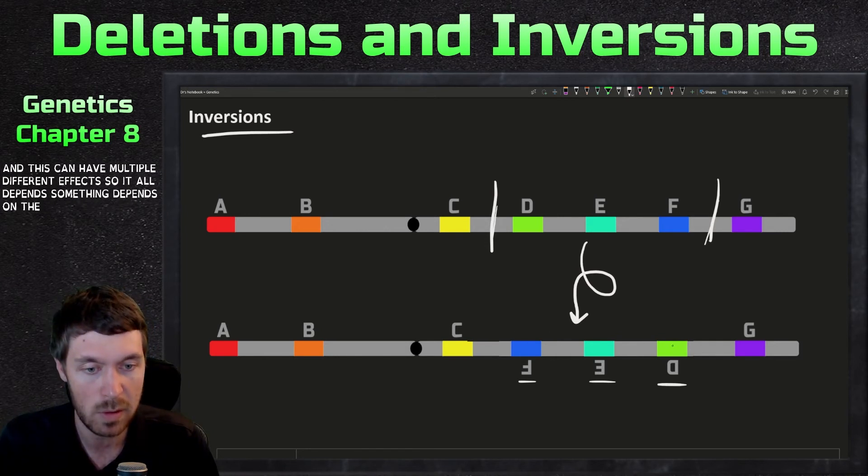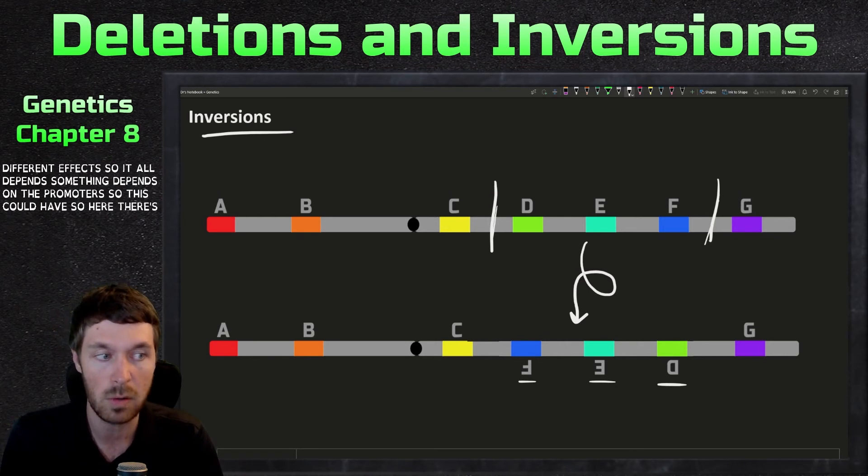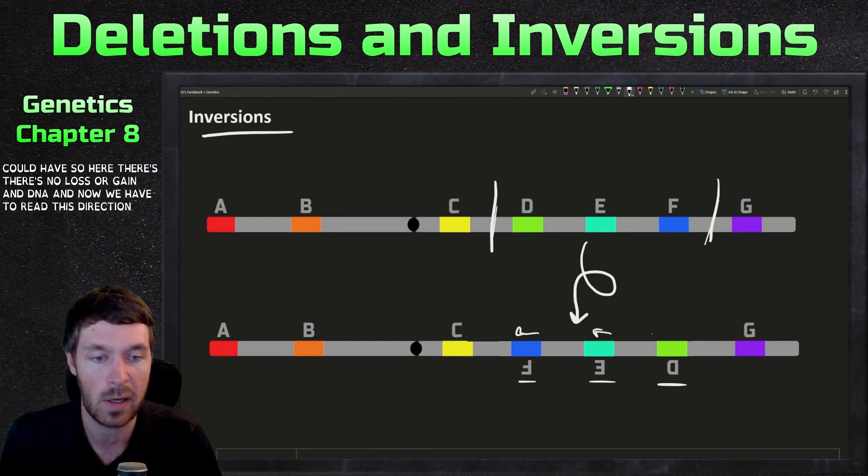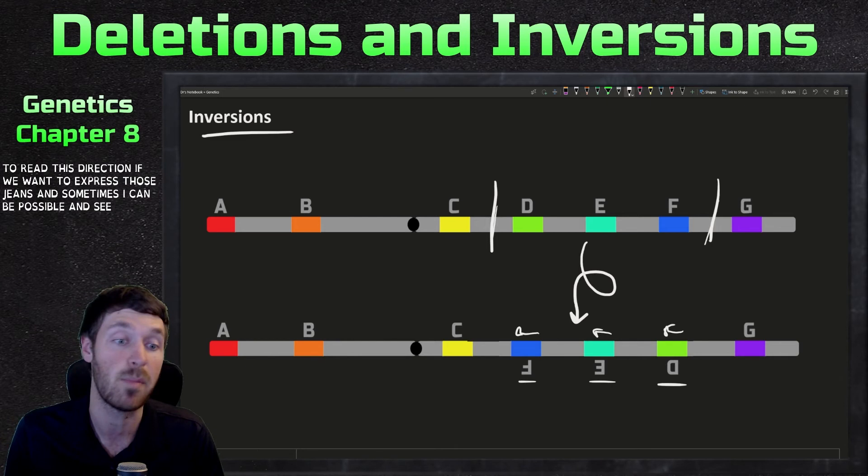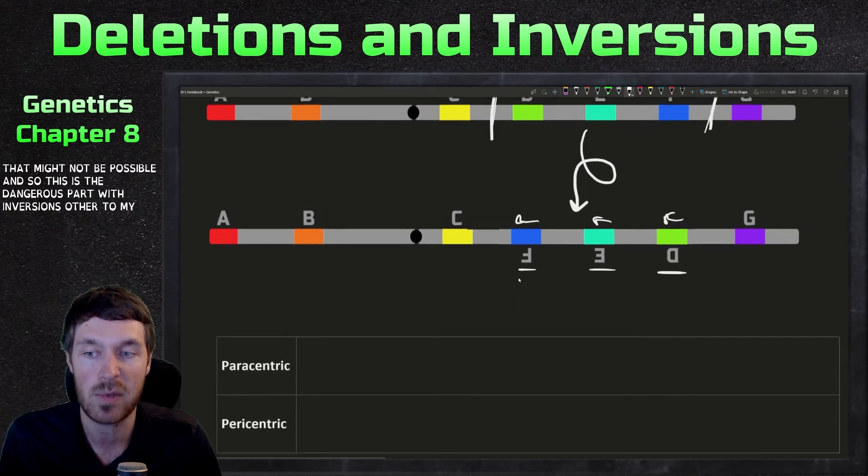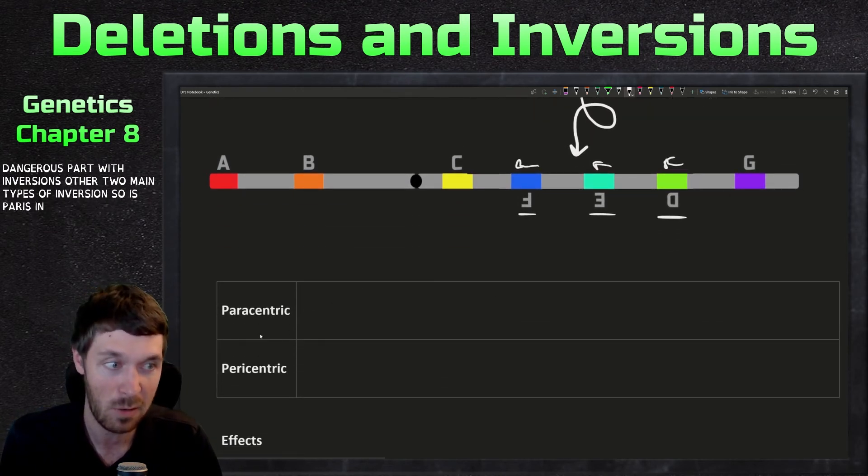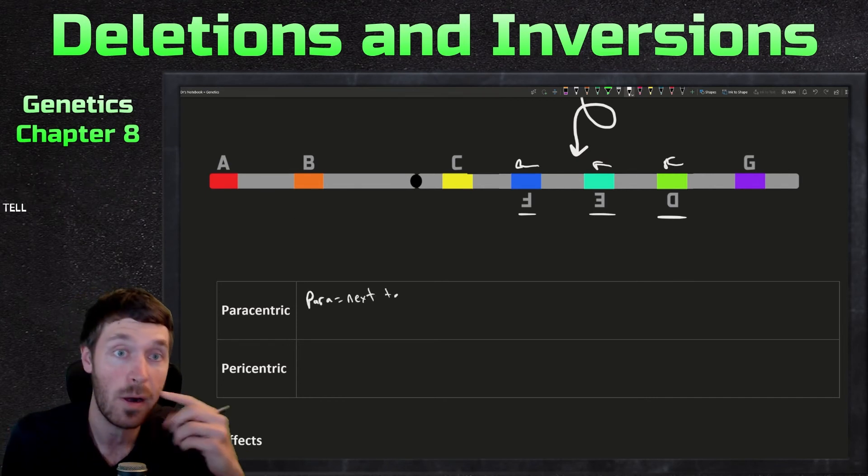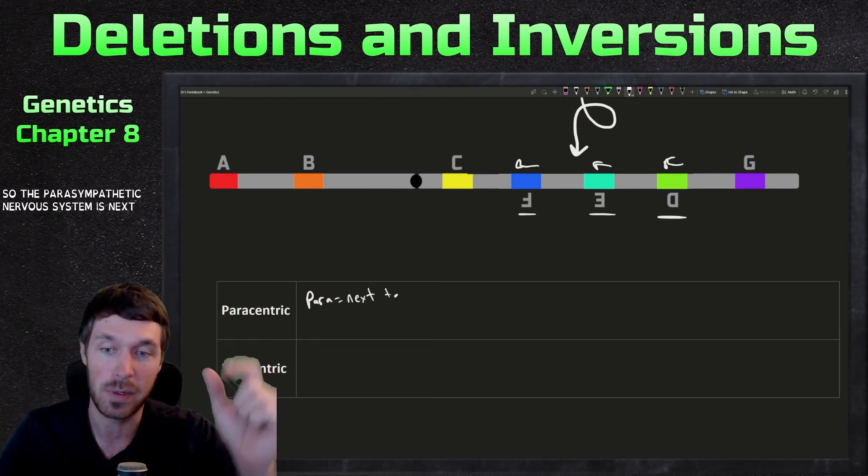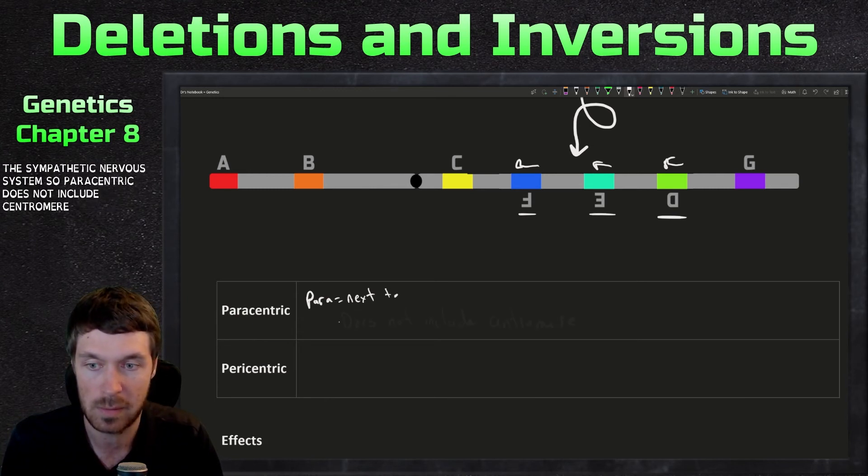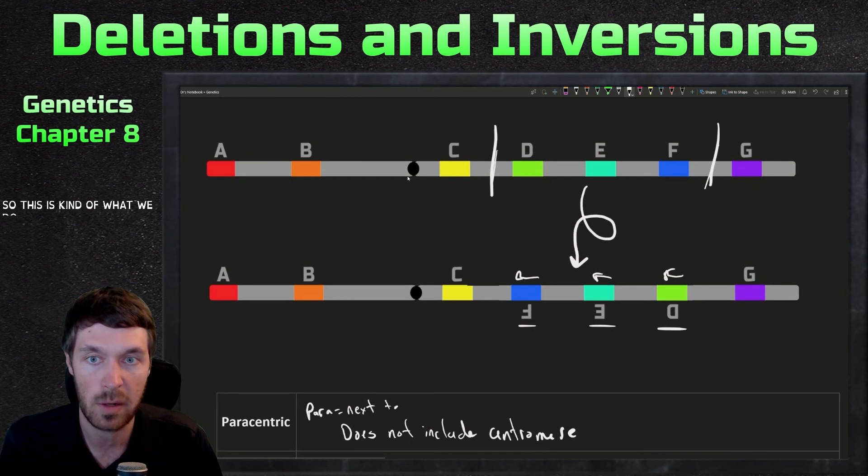So it all depends. It depends on the promoters. So this could have, so here there's no loss or gain in DNA. And now we have to read this direction if we want to express those genes. And sometimes that can be possible and sometimes that might not be possible. And so this is the dangerous part with inversions. Now there are two main types of inversions. There's paracentric and pericentric. So para means next to. So the parasympathetic nervous system is next to the sympathetic nervous system. So paracentric does not include centromere.